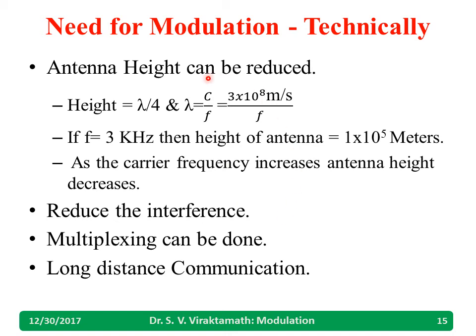There are many other reasons to use modulation. One is to reduce interference — if all AM broadcast stations transmit at the same 20–20 kHz, there will be interference. By choosing different carrier frequencies, interference can be avoided. Multiplexing can also be done, and long distance communication becomes possible. So there is a big list of reasons for the need of modulation.